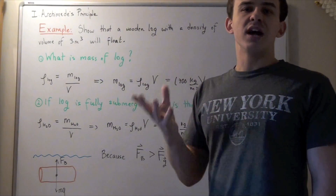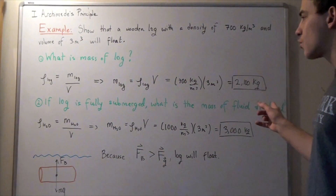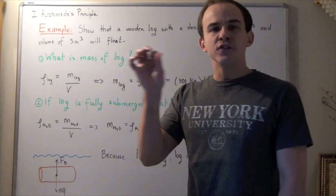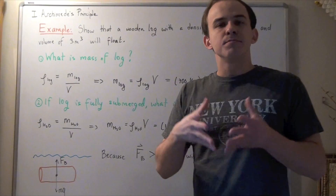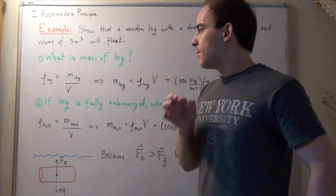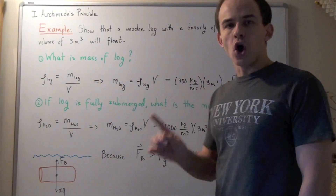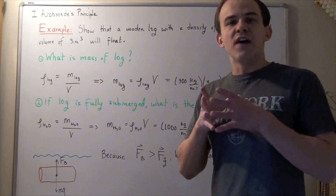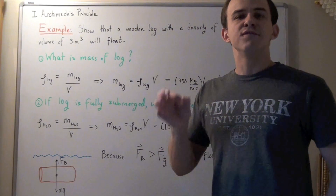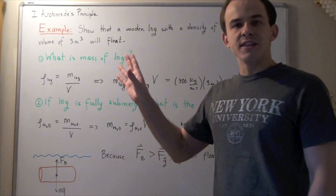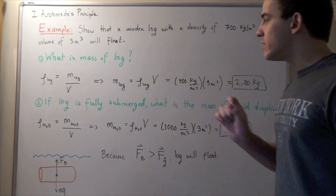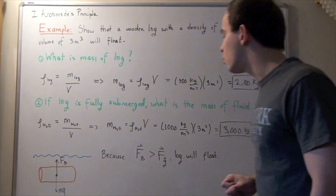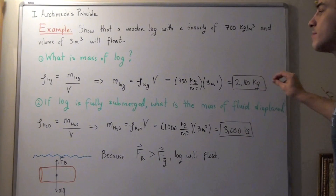So the mass of our log is 2100 kilograms. Now we want to find the mass of the fluid displaced when that log is fully submerged. Archimedes' Principle states that the volume of fluid displaced is equal to the volume of our object — in this case, the log.